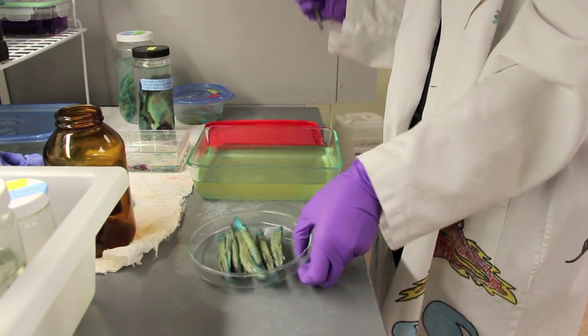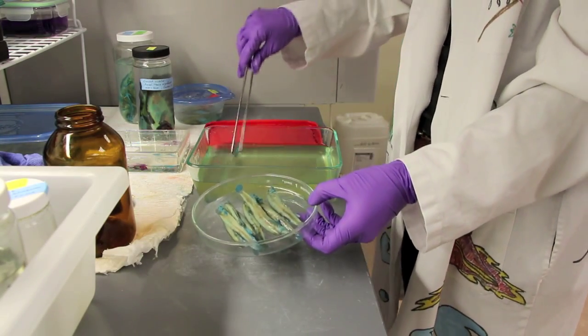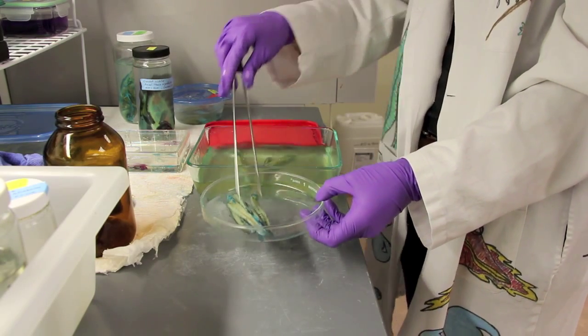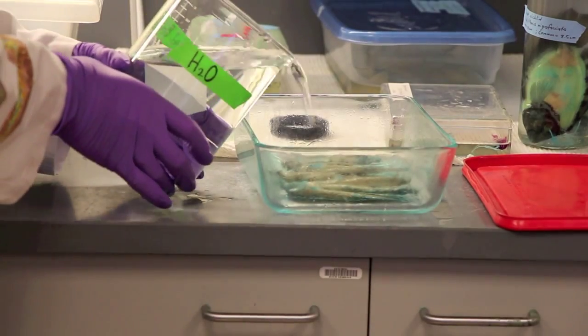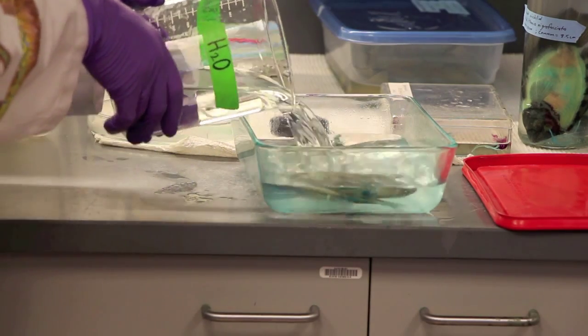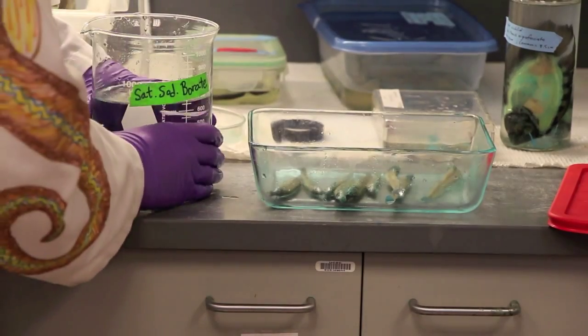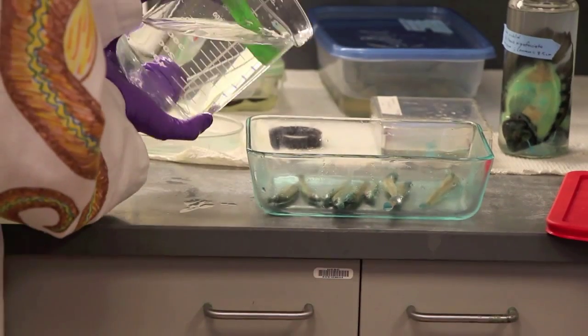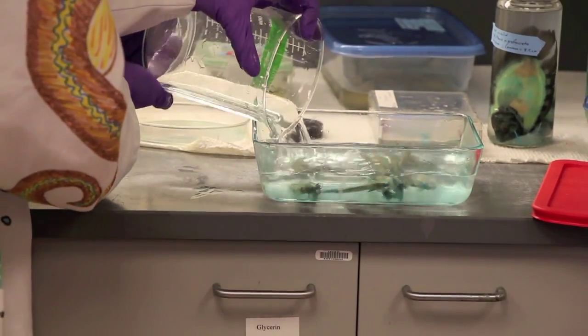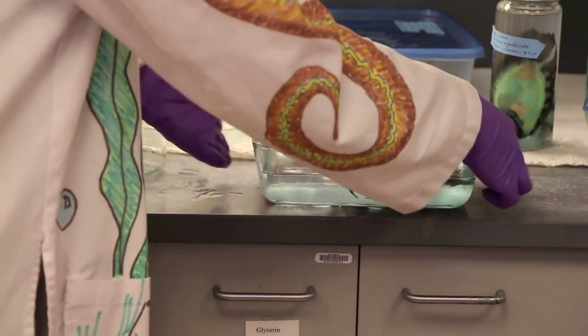Next, we place our specimens in a bath of ethanol, or ETOH, for a few hours, or even all day if the specimen is overstained. The next step is to place our specimens in water for a couple of hours. And then, we place our specimens in saturated sodium borate to neutralize them. This process takes 6 to 12 hours.